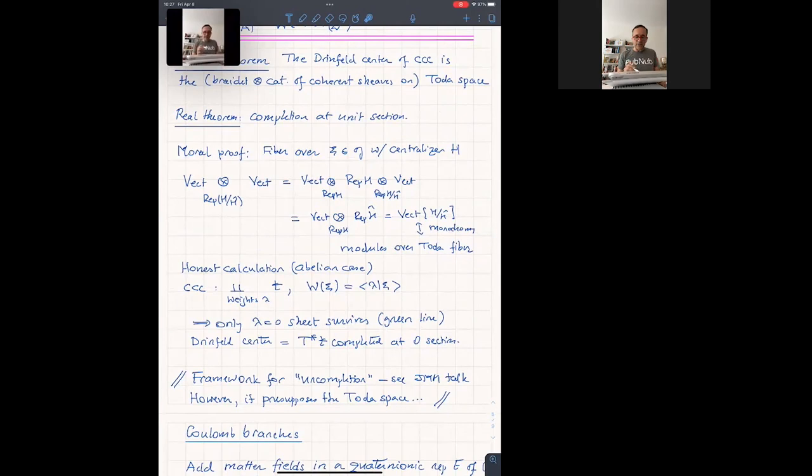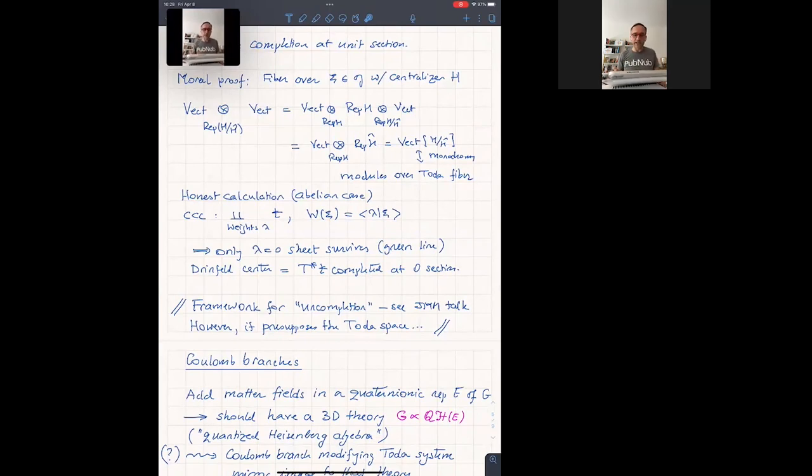And there's a little yoga with, if you have enough faith, where you end up with the calculation of Vect tensor over FH, FH hat. And these are vector bundles on H mod H hat, which are local systems on H. And the monodromy representation identifies that exactly with the modules over the Toda fiber over that point. If you do an honest calculation in any usual setting, you'll see that's not quite what happens. Let's take the abelian case. Then T doesn't act in the Lie algebra. So we just get the tensor category of representations of T. So just sum over the weights, the tensor product being the sum of copies of the Lie algebra. And the super potential is linear on each sheet.